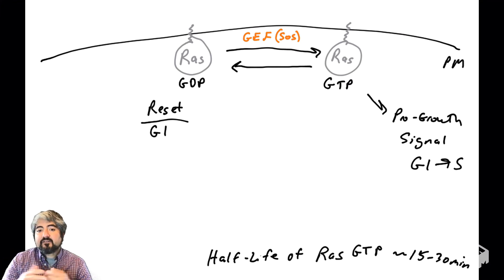The half-life of RAS bound with GTP is about 15 to 30 minutes. It actually will go back to its GDP-bound form within that time, so it resets itself. Then it's just waiting for another pro-growth signal from growth factors. So how does RAS go back to having GDP on it?